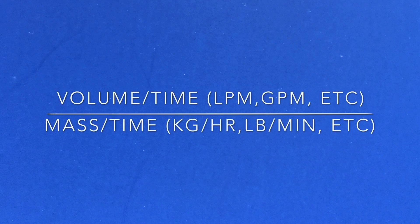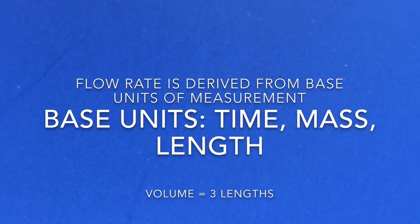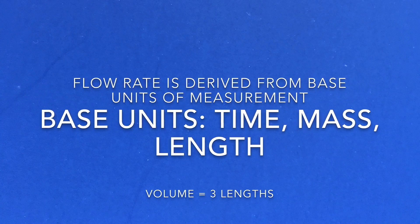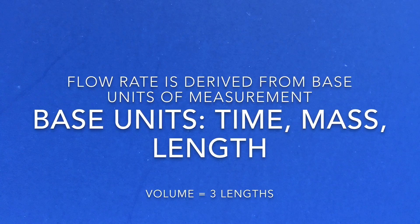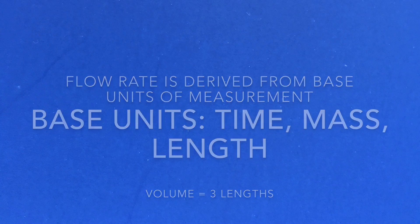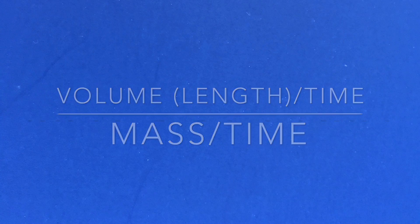Flow rate is measured in either volume per time or mass per time. Volume flow such as liters per minute, gallons per minute. Mass flow such as kilograms per hour and pounds per minute. Flow rate values are derived from the base units of measurement. Mass and time are base units of measurement, and volume is length in three different directions. So that's where volume per time and mass per time come from.